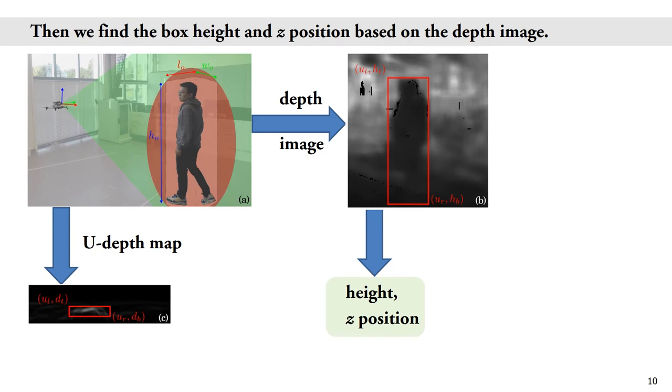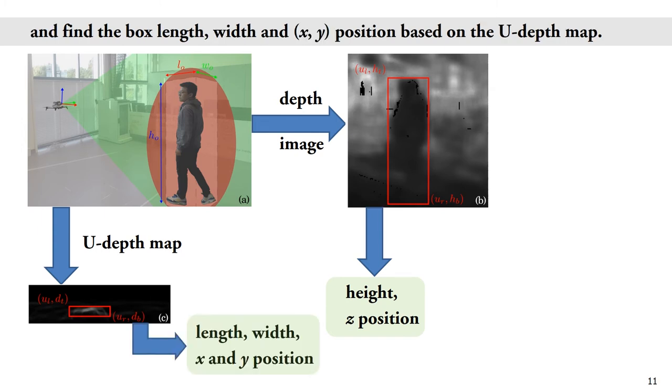Next, we find the obstacle height and z-position based on the depth image. And we further find the obstacle box length, width, and its x-y position based on the U-depth map. Until now, we have obtained both the position and size of the obstacles.